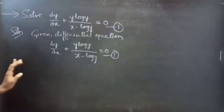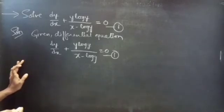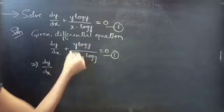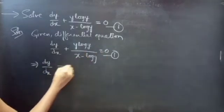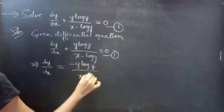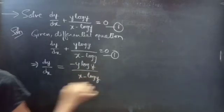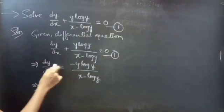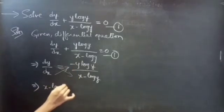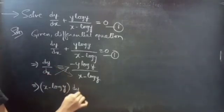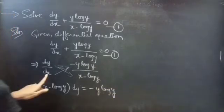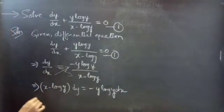Now we are going to reduce the given equation to linear form. So dy/dx — you can take this term to the RHS and get minus y·log(y) by x minus log(y). Then you can make cross multiplication: x minus log(y) into dy equals to minus y·log(y) into dx.